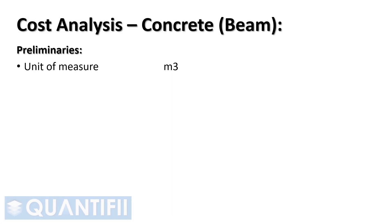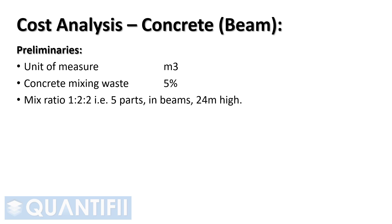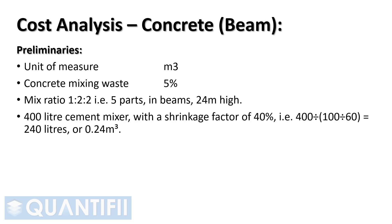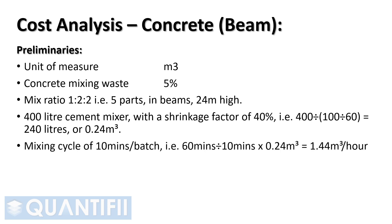Let's work through an analysis for a reinforced concrete beam, 24 meters high. Let's assume the following: unit of measure cubic meters; concrete mixing waste 5%; mix ratio 1 to 2 to 2, that is 5 parts; 400 liter cement mixer with a shrinkage factor of 40%, that is 400 divided by (100 divided by 60), which equals 240 liters, or 0.24 cubic meters; mixing cycle of 10 minutes per batch, that is 60 minutes divided by 10 minutes, multiplied by 0.24 cubic meters, which equals 1.44 cubic meters per hour.